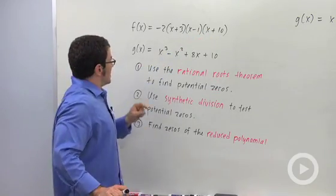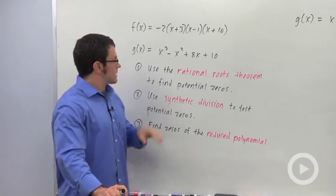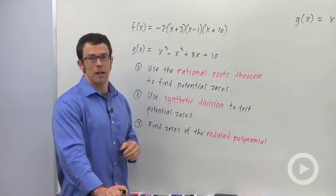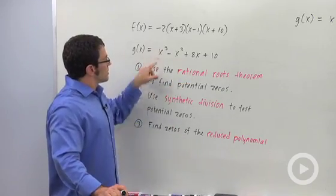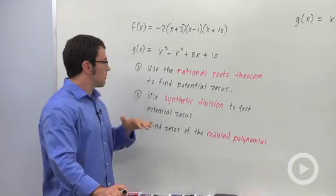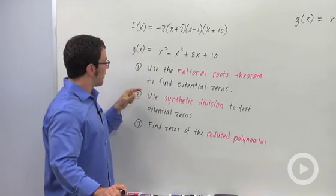So you're generally not going to get a problem this easy. What about g of x, which is not factored? This is the kind of problem you'll see. Find the zeros of g of x. Well, there are generally three steps we have to think about.